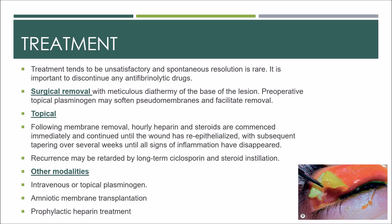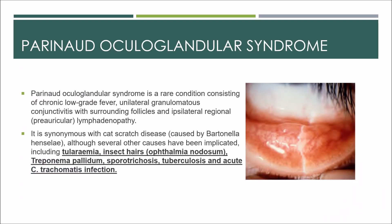We are going to discuss Parinaud's oculoglandular syndrome, which is a rare condition consisting of chronic low-grade fever, unilateral granulomatous conjunctivitis with surrounding follicles, and ipsilateral regional pre-auricular lymphadenopathy. It is synonymous with cat scratch disease caused by Bartonella henselae, which has been discussed in uveitis. There are several other causes which need to be mentioned.